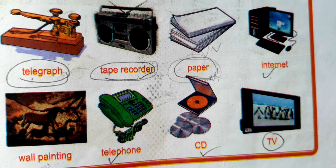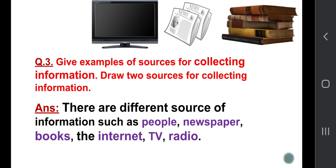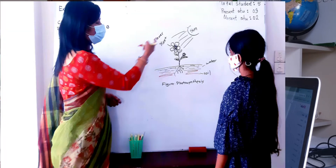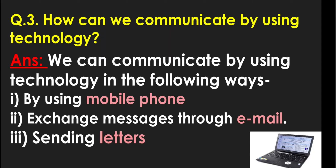There are various types of information and communication technology such as computers, internet, mobile phones, TV, DVD, and CD. People have invented and developed various types of technologies in order to pass on information to others.